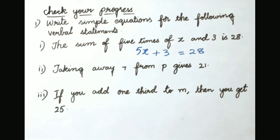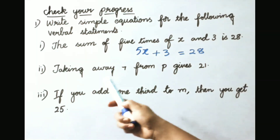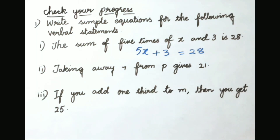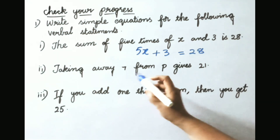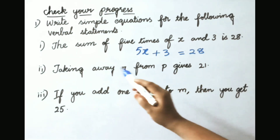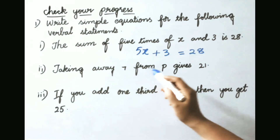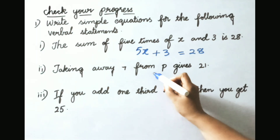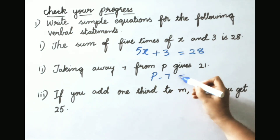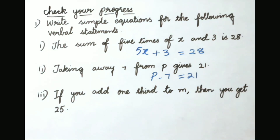Second: taking away 7 from p gives 21. Taking away 7 means subtraction, so taking away 7 from p is p minus 7, which gives 21. Therefore the simple equation is p minus 7 equals to 21.